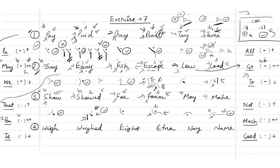Moving to the fourth line. We have 'way'. First make the 'w' character, then put a high dot because it sounds like 'a' as in 'may'. That's 'way'. Next we have 'wait' — 'w', then the 'a' vowel, then 't'. We put the high dot before the 't'.